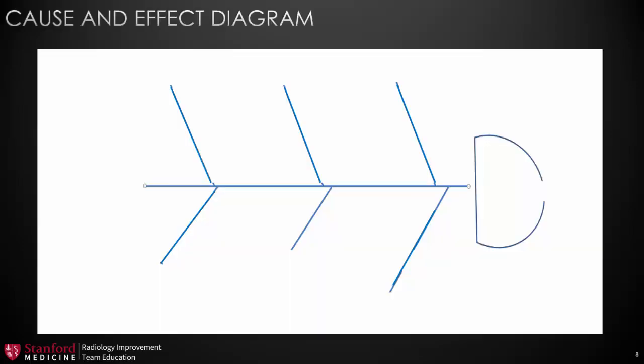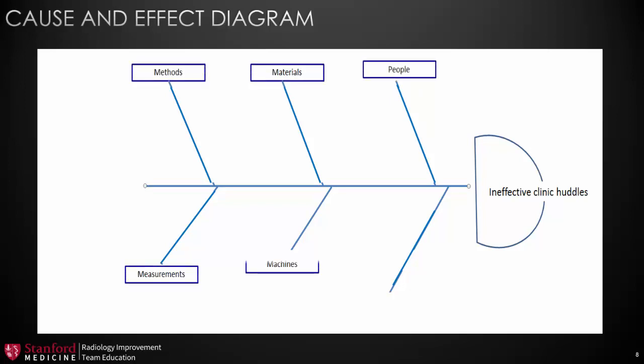So, cause and effect diagram, the second tool we're going to look at today. What the cause and effect diagram will do is help you better understand your categories for cause. So what we do is we take our problem, we stick it in the fish's mouth. And then some common categories that would label the fish bones are methods, materials, people, measurements, machines, and environment.